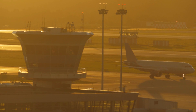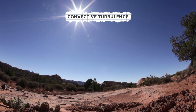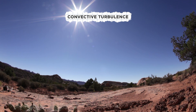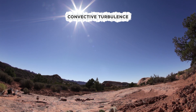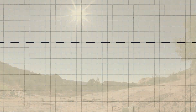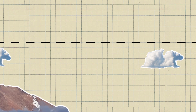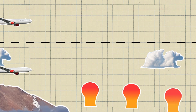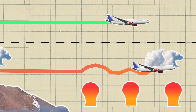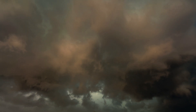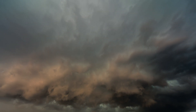Some forms of turbulence can be predicted, such as convective turbulence. The earth is heated unevenly and land heats up a lot faster than water does, so areas like deserts and rocky terrain absorb and release more heat than areas with lots of water and plants. These areas release columns of heat that rise and interact with the air surrounding a plane. It also occurs within cumulonimbus clouds, which are associated with thunderstorms. Pilots usually fly above or around predicted storms.